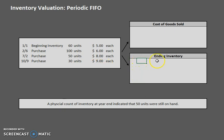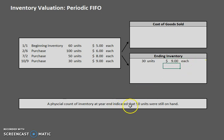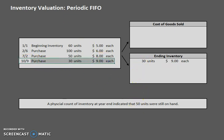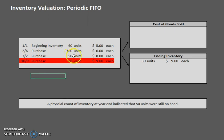So let's start finding out the cost of those 50 units in the ending inventory section. We see here that we have 30 units at nine dollars each. Now we need to account for 50 units total, but since there are only 30 units in this layer, that's the first step. So we put down 30 units at nine dollars each. We still need 20 more units — we've only accounted for 30 of them.